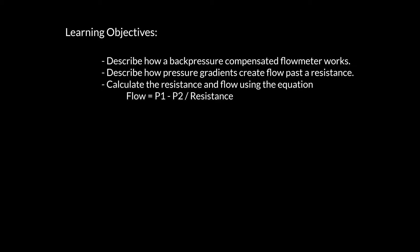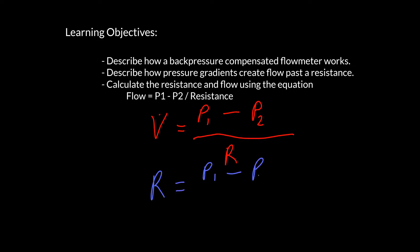Another way we can write that is: flow is equal to our pressure gradient divided by resistance. In this case, we're going from the wall pressure — the pressure gradient compared to atmospheric pressure, which is zero psig — and we're overcoming the resistance. We can rewrite that equation to solve for resistance as well, by interposing the flow. So using this same equation, we can solve for flow and we can solve for resistance, but more importantly, we can understand how creating a pressure gradient creates flow.